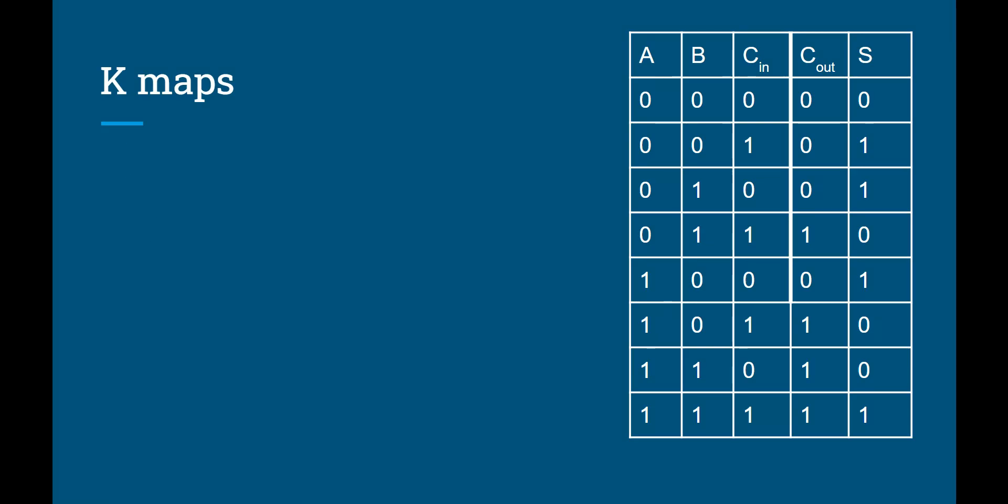For our next one, the carry out, you guys can see, hey, there are some 1s here that we can combine. And this K-map might look familiar to you if you've been paying really close attention in class. This is actually one of the alarms from our printer problem. So you guys have already solved this problem. But here, that circle will be BC or AB or AC.